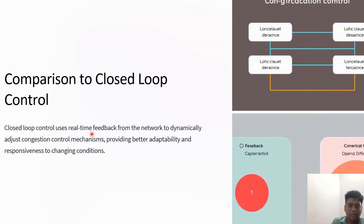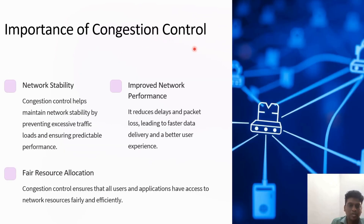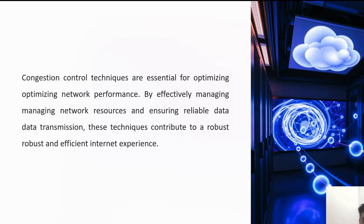Compared to closed loop control, which uses real-time feedback from the network, open loop provides better adaptability and responsiveness to changing conditions. Congestion control is needed most as it helps in stabilizing the network by preventing excessive traffic loads and ensuring network performance. It also helps in reducing delays and packet loss, enabling faster data delivery, and ensuring fair resource allocation so all users and applications can access network resources efficiently.